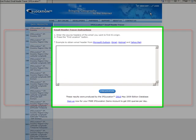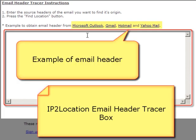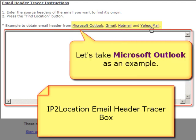On this page, you are able to find the IP2Location email header tracer box. IP2Location offers four examples of the email header. Let's take one of the examples to learn how to obtain the email header.